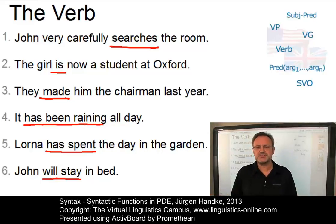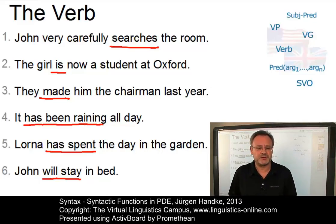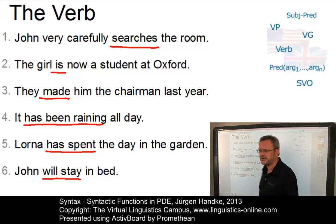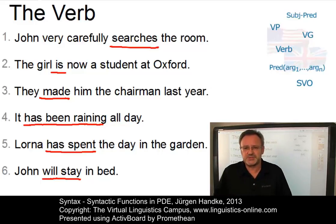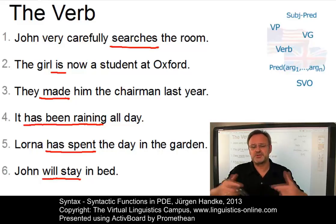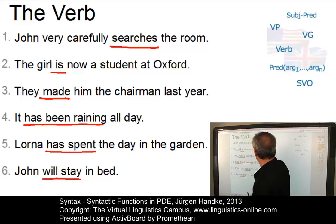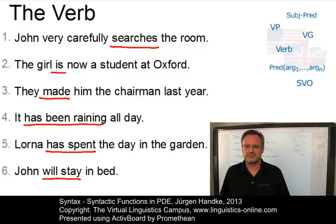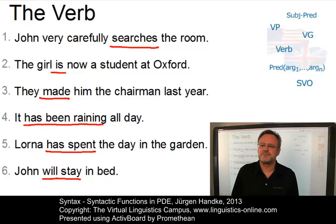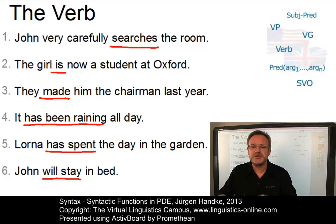How can we identify the verb? It's relatively easy. In present-day English, it occurs usually in the middle rather than at the beginning or the end of a clause — exceptional, of course, are imperative sentences. In major sentences like these, the verb is obligatory; we cannot drop the verb without making the sentence ungrammatical. The verb can also normally not be moved into a different position. Furthermore, the verb determines what other functional elements must occur — for example, the verb search determines that the subject must be an agent and that there must be an object. And last but not least, the verb is marked morphologically: the word classes that realize the syntactic function verb are auxiliaries and verbs themselves.